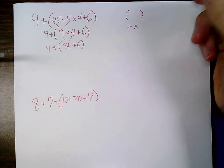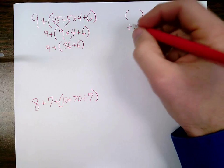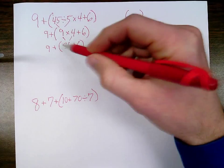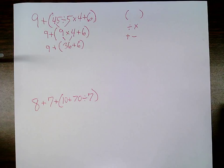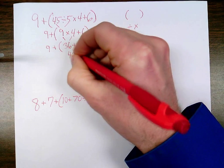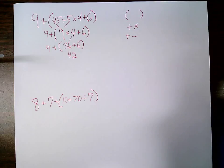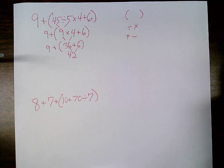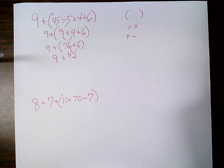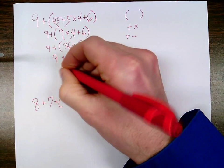I move on to addition and subtraction. I'm still within my parentheses because I haven't finished them off yet. 36 plus 6 is 42, and my parentheses are done there. I've simplified them down to the simplest form and then I bring down everything else. 9 plus 42 is 51.